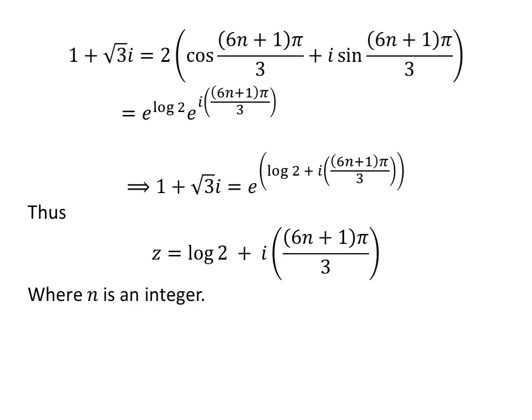Thus, Z is equal to natural log of 2 plus iota times 6 times n plus 1 times pi upon 3, where n is an integer.